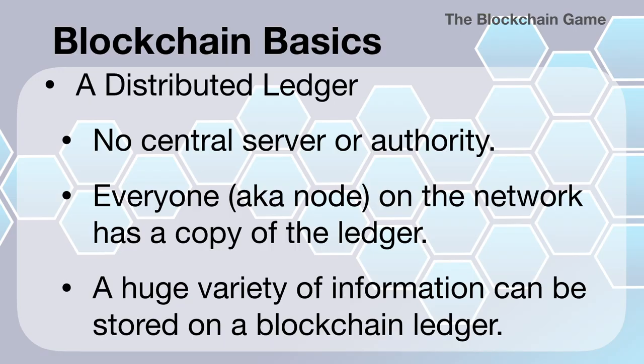I start out by explaining blockchain basics. I tell the students it's a distributed ledger — there's no central server or authority that can be hacked or that maintains this ledger. We're going to have this ledger distributed amongst different people in our network, and in blockchain parlance we call those things a node. Every node and every person on this network has to agree as to how the information will be recorded. That's one of the differences between different blockchains.